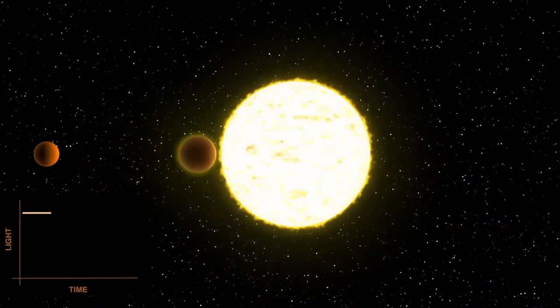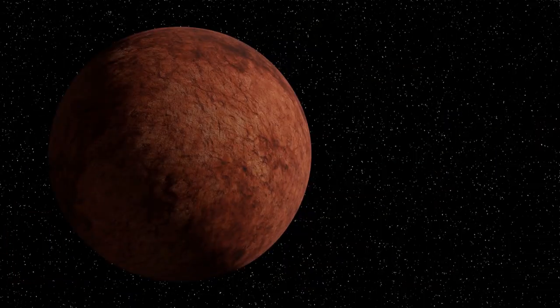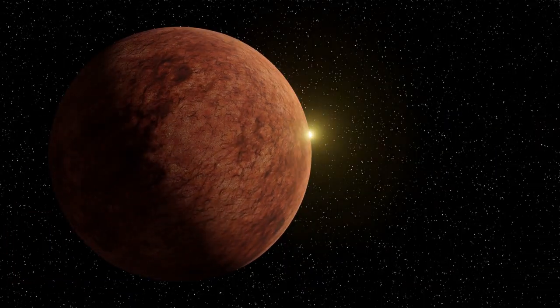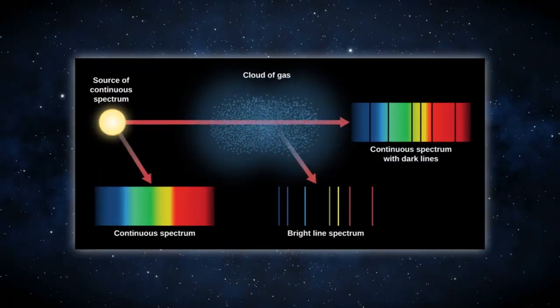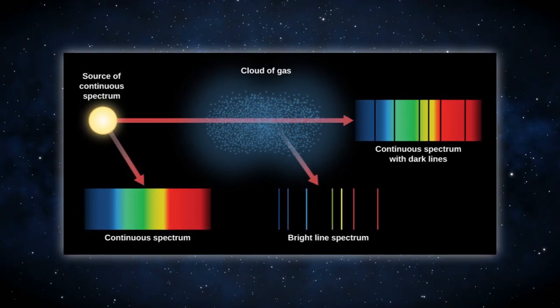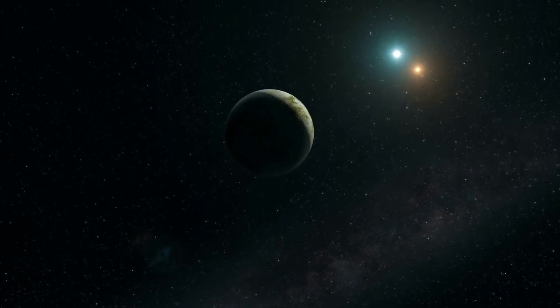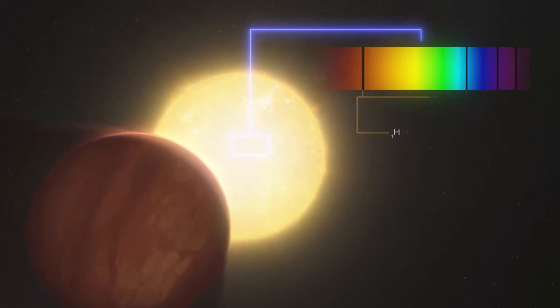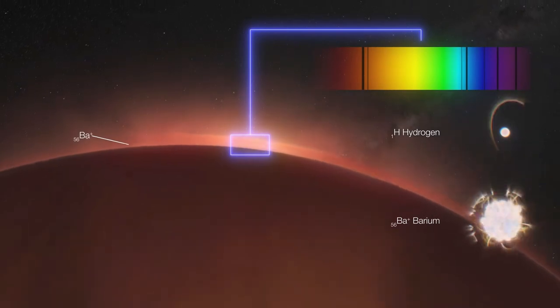When a planet crosses in front of its star, molecules in the atmosphere absorb some of the star's light, leaving black lines in the star's spectrum, which is a barcode-like breakup of light by wavelength. Astronomers can learn about a planet's formation and evolution, environmental conditions, and chemical processes by studying its atmosphere, if any atmosphere exists.